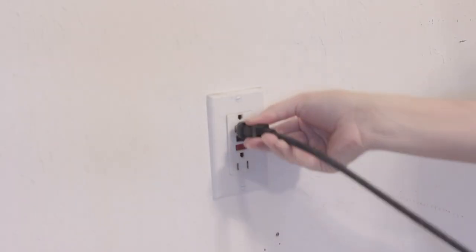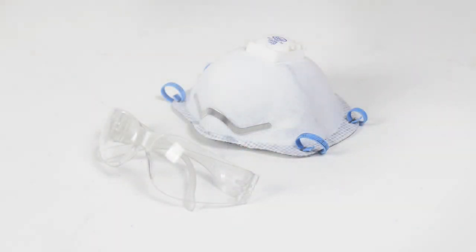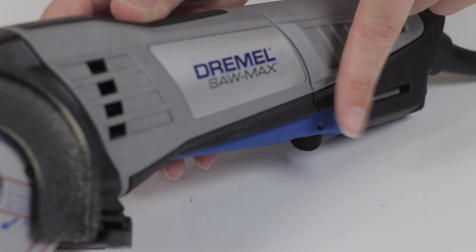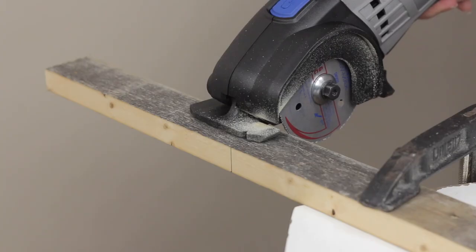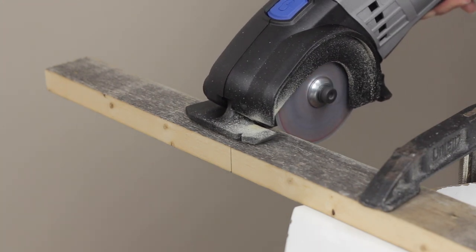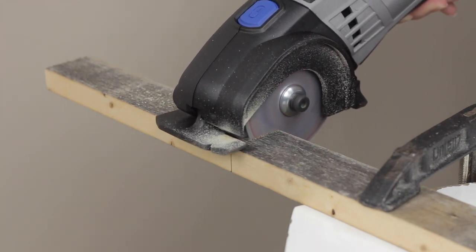I can now plug in the saw and put on my safety equipment. To turn on the saw, toggle the lock lever and then press the paddle switch. Once the wheel is up to speed, align the guide with the cut line and make the cut.